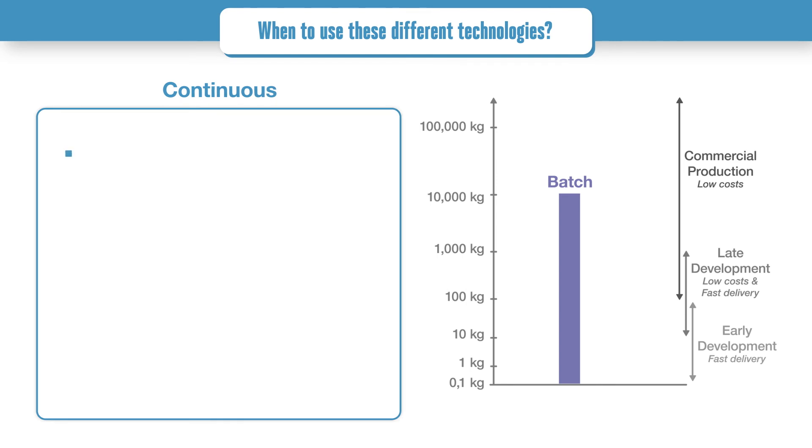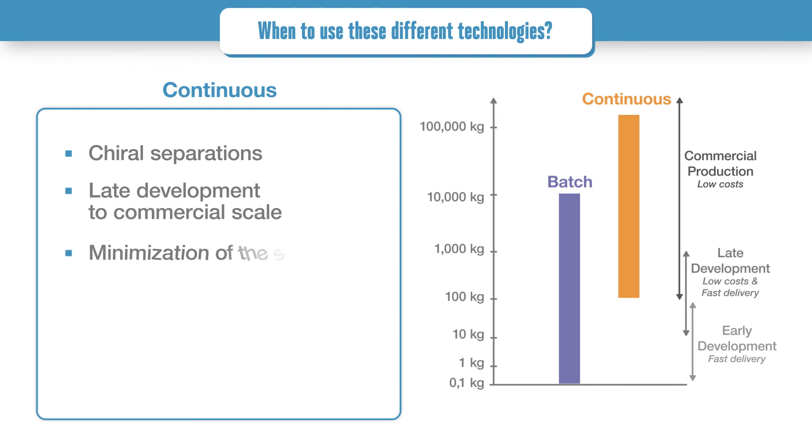A continuous chromatography process is ideal for chiral separations, as it brings more productivity and cost efficiency, notably with Varicol. It can also be suitable for difficult binary separations using Cyclojet technology, individual or group of species. Continuous chromatography processes are suitable for late development and industrial scale. The implementation of these processes enables to optimize the usage of the stationary phase necessary to achieve the purification.